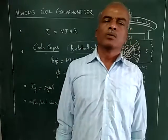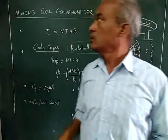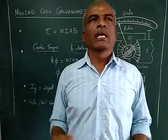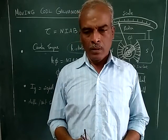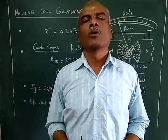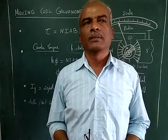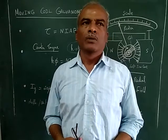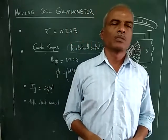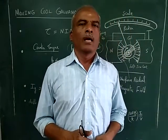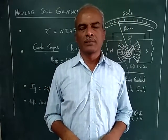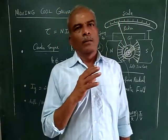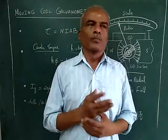Hello viewers, today we are going to see about the moving coil galvanometer. A galvanometer is basically used to measure very small current in the order of 10 microamps, 20 microamps. We have two types of meters: one is moving coil and another one is moving iron meters.